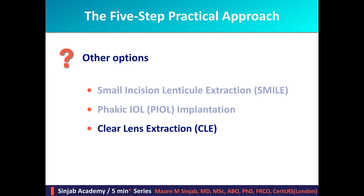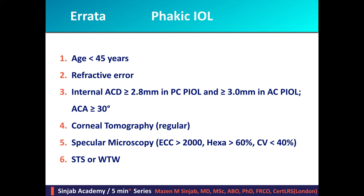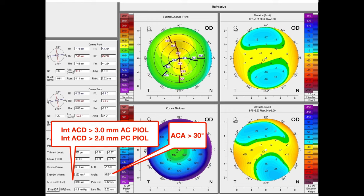In this video, I'd like to first correct a slide from the previous video. The correct information is that the internal anterior chamber depth should be at least 2.8 mm for the posterior chamber type of phakic IOL, and at least 3 mm for the anterior chamber type of phakic IOL. When we look at the tomography, we have to consider the internal anterior chamber depth.